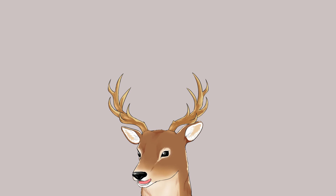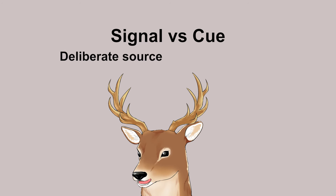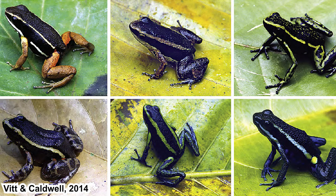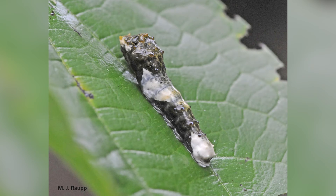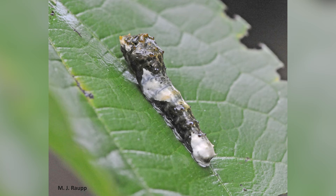The mimic can mimic by signal or by cue. Signal means a deliberate source of information, while cue means an incidental source of information. In the Amazonian frogs, the coloration is a signal — called aposematic coloration, a specific signal intended to show predators they are dangerous. In the case of the bird-poop caterpillar, they mimic bird droppings so predators don't eat them — this is a cue, because bird poop is not specifically made to deter predators; it's just that predators don't like eating poop.